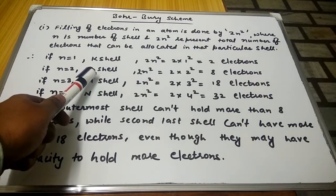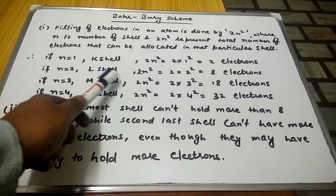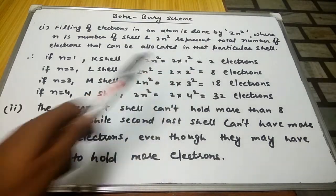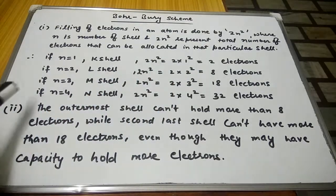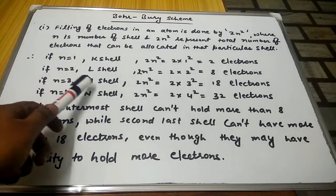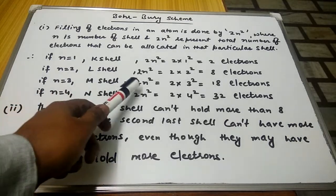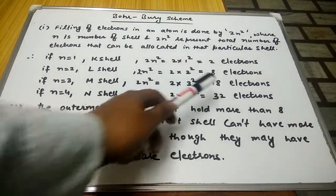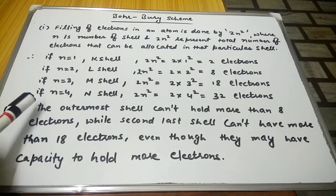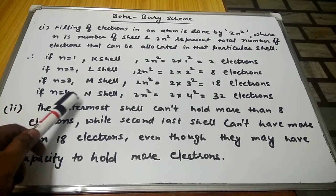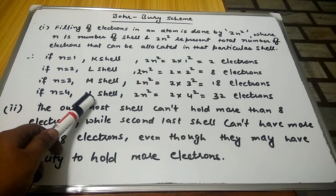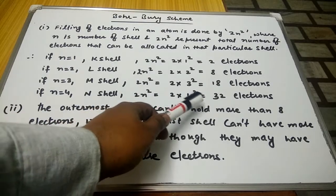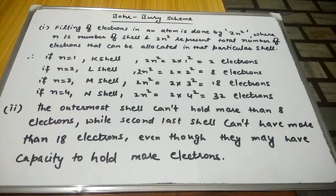If n is equal to 2, it is denoted as the L shell; 2n² gives 2 into 2², which is 8 electrons. Similarly, n is equal to 3 is the M shell; 2n² gives 2 into 3², which is 18 electrons. And lastly, if n is equal to 4, which is known as the N shell, 2n² gives 2 into 4², which is 32 electrons.